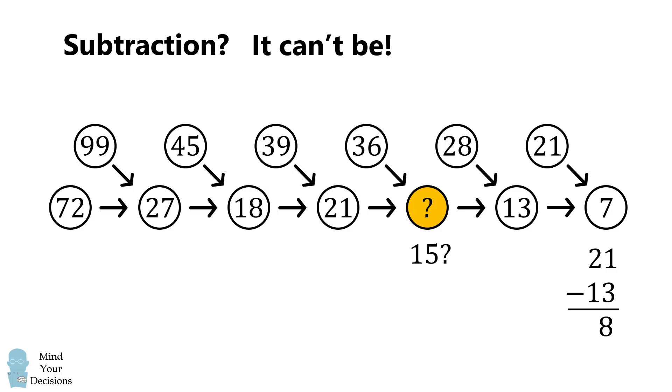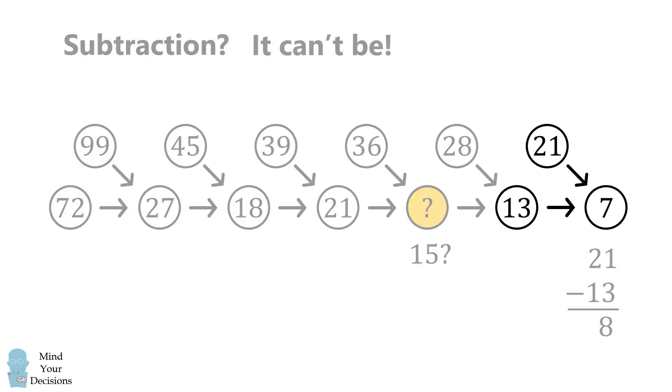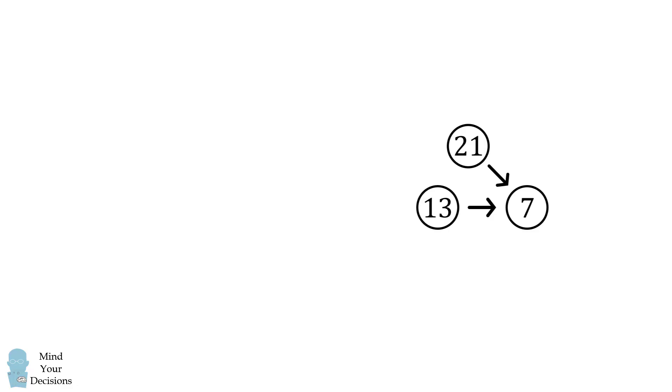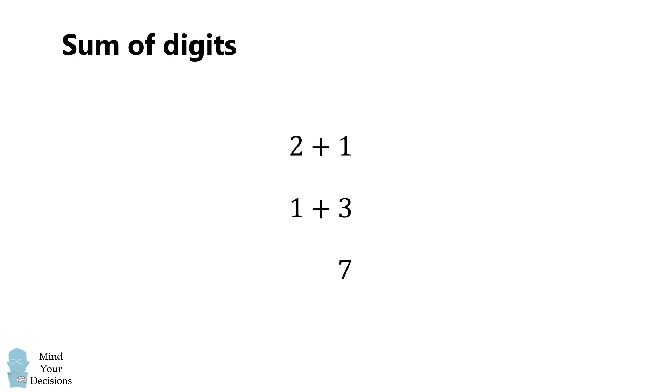We have to think of some other simple rule to combine the numbers. So let's examine the very last three numbers. How can we combine 21 and 13 to get 7? After some experimentation, you might come across the possibility of summing the digits in the two numbers. So we have 2 plus 1 plus 1 plus 3, and that in fact is equal to 7.